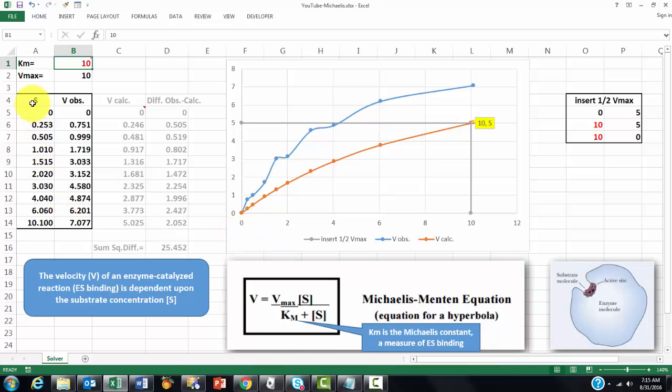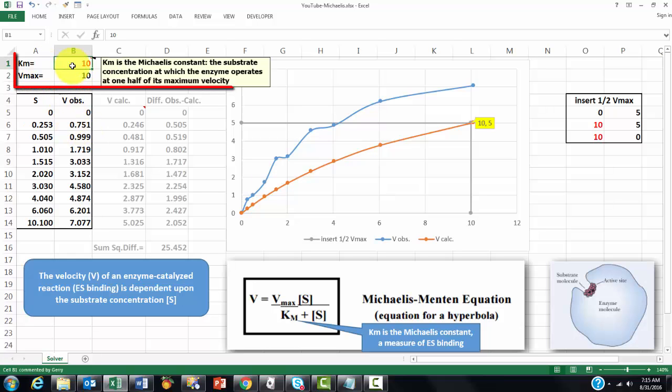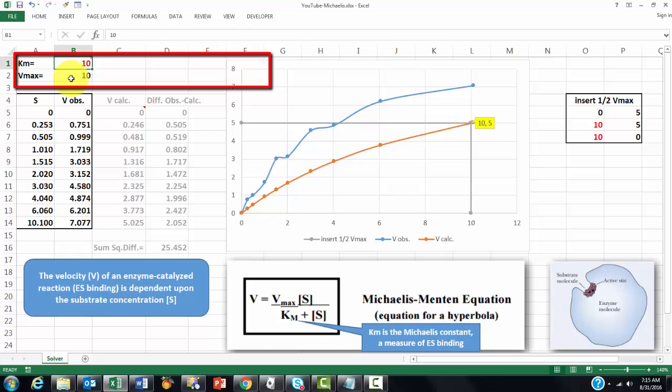So if you have these substrate concentrations and these enzyme velocities of reaction, then you would like to know what the Michaelis constant is. It's the substrate concentration at which the enzyme operates at one half of its maximum velocity. So you also need to know what the maximum velocity is. How can you calculate all of that in Excel?